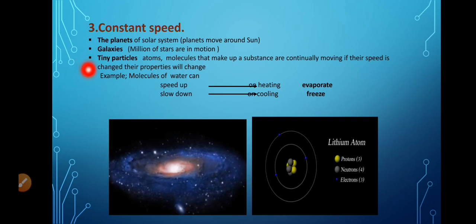And the third example is the tiny particles. Tiny particles like atoms, molecules. These make up the substance. So inside an atom the small particles like electron, proton and neutron are there. That are also in motion. But their motion is with constant speed. So if the speed of the atom or the molecules is changed, their properties will also change.